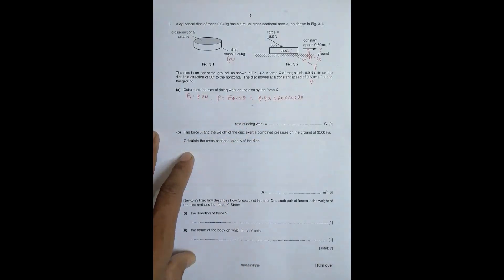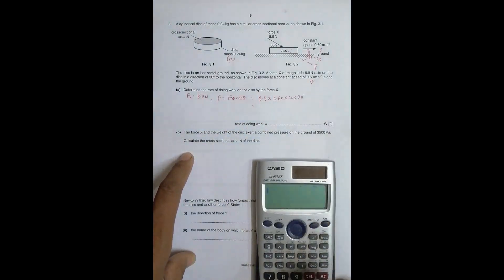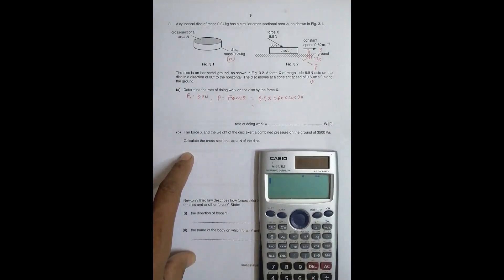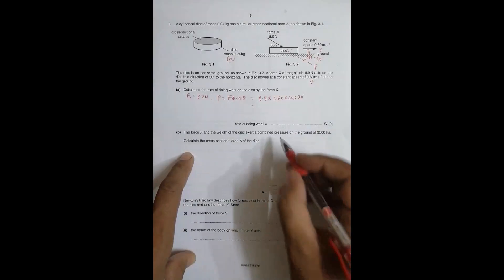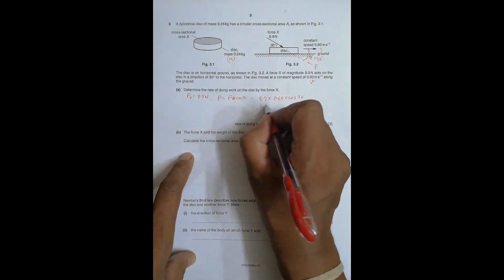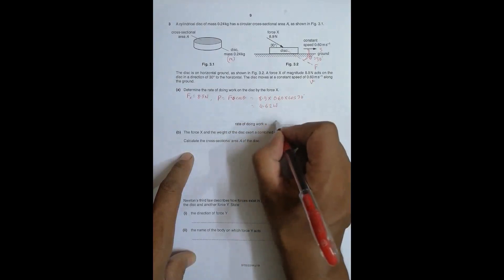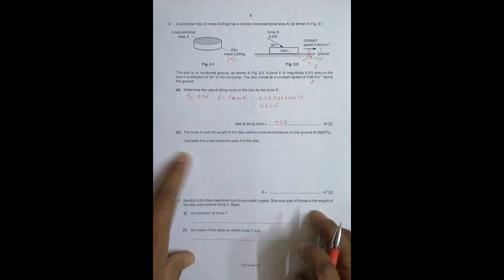Cos 30 × 0.6 × 8.9 equals... this comes to be 4.6, so it is 4.62 W when I use three significant figures.